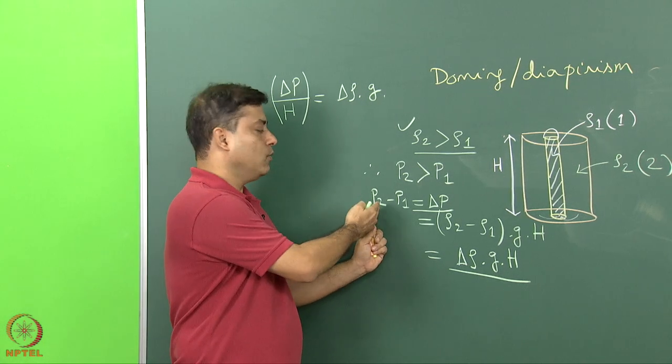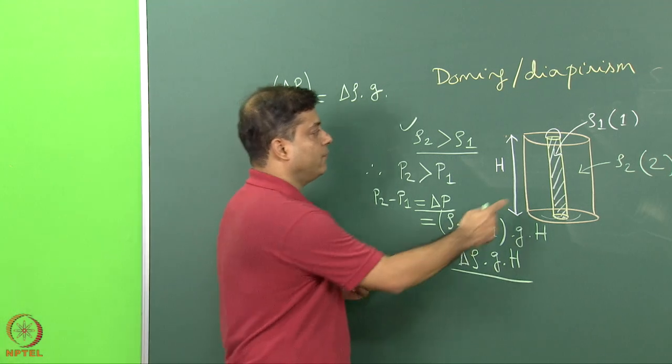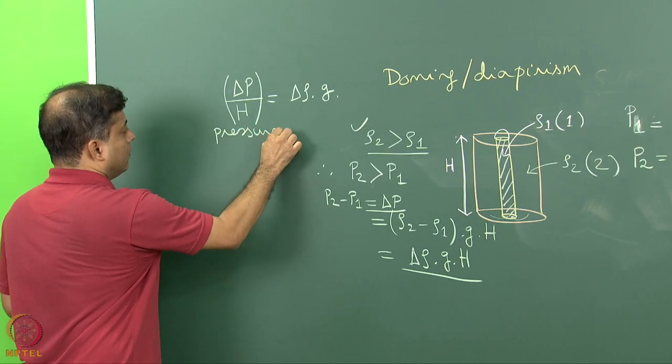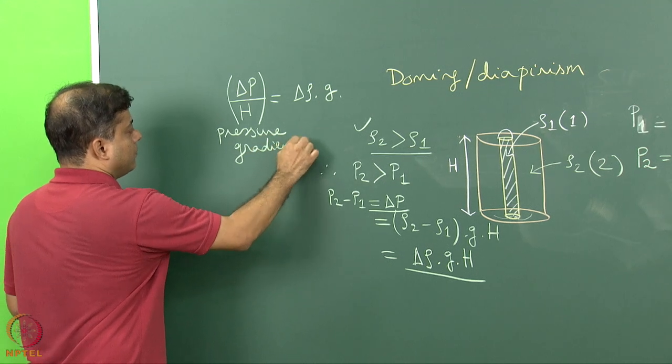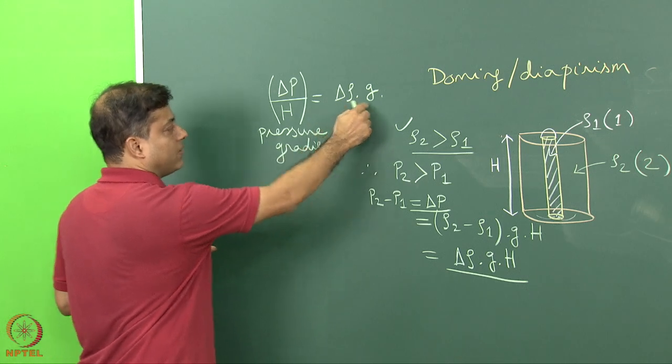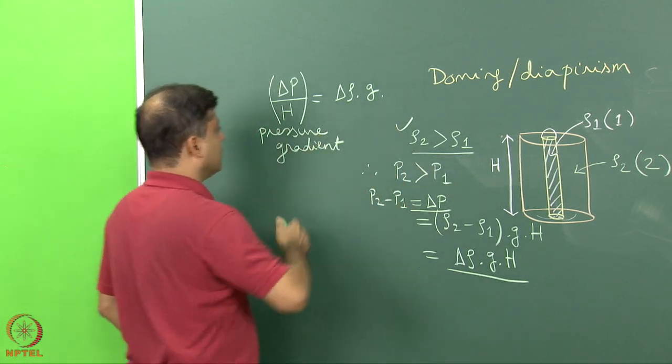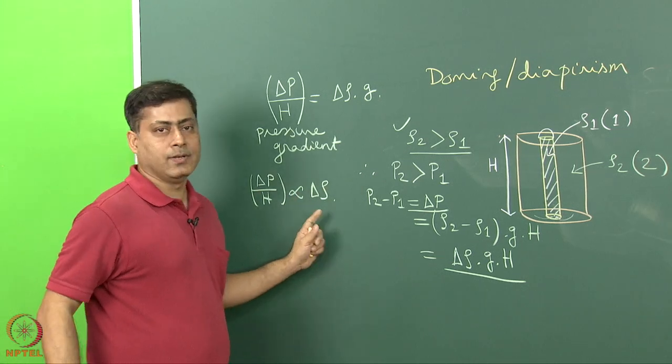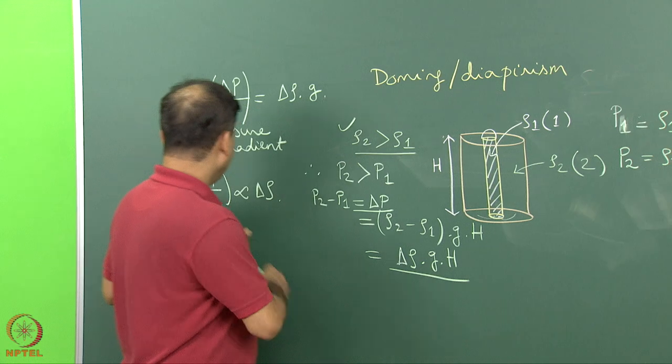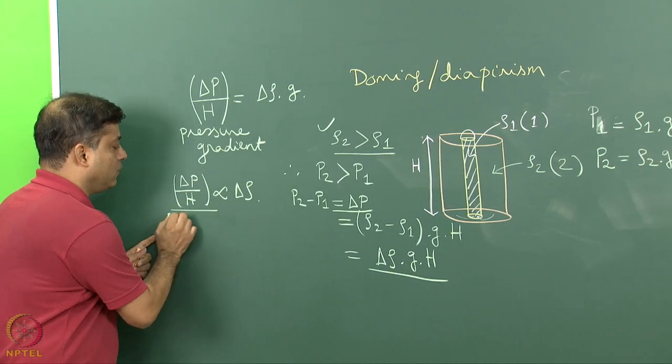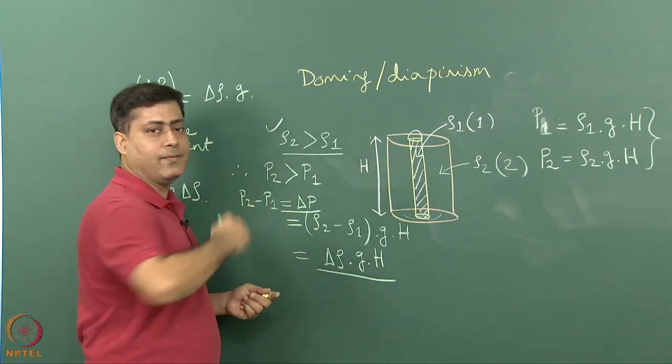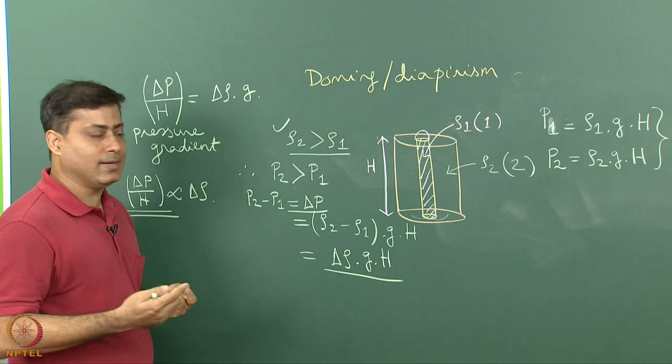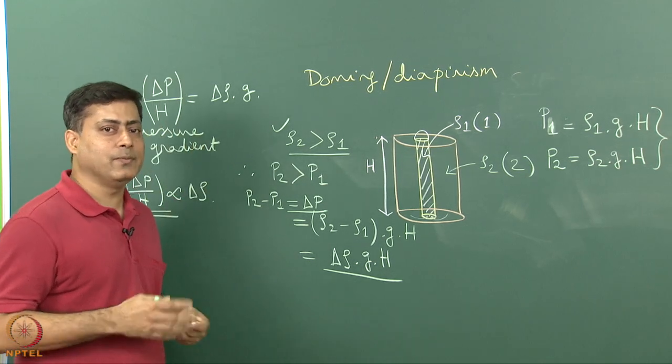This is the stress difference leading to the extrusion of fluid one driven by fluid two. Delta p by H can be called pressure gradient. The pressure gradient equals the density difference multiplied by acceleration due to gravity. Since g is constant, we can write delta p by H is proportional to delta rho. Greater the density difference, higher the pressure gradient value. This becomes important when we model the extrusion of domed material such as salt.